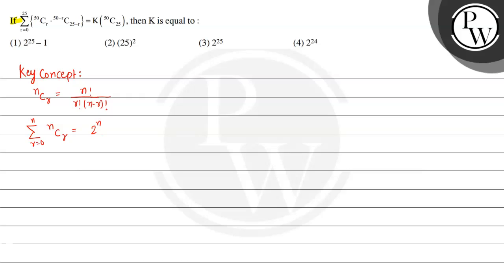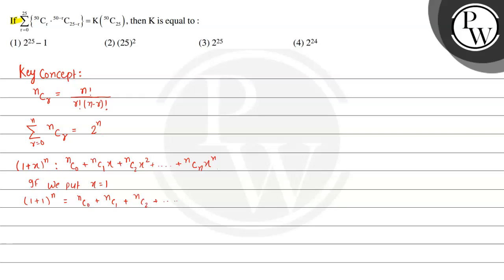This formula comes from: suppose we have (1 + x) to the power n. If we do binomial expansion, we get nC0 plus nC1·x plus nC2·x squared, and so on up to nCn·x to the power n. If we put x equal to 1, then we have (1+1) to the power n equal to nC0 plus nC1 plus nC2 and so on up to nCn, which gives 2 to the power n, i.e., summation of nCr from r = 0 to n equals 2 to the power n. We will use this concept to solve the given question.